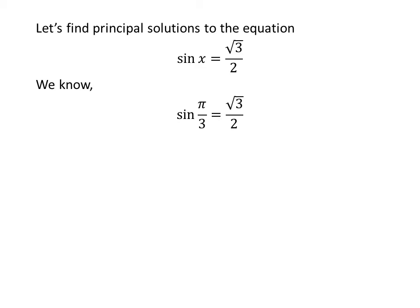We know the value of sine of π upon 3 is square root of 3 upon 2. We also know the famous trigonometry identity: sine of π minus A equals sine of A.